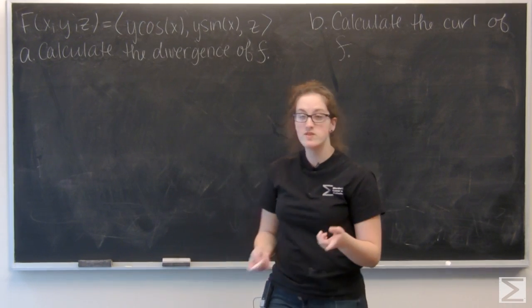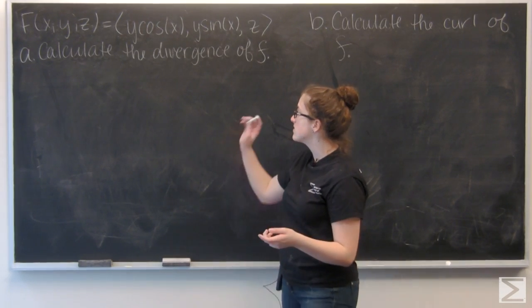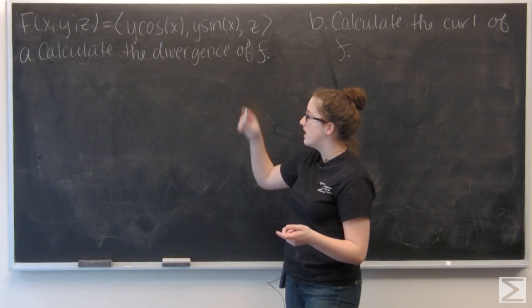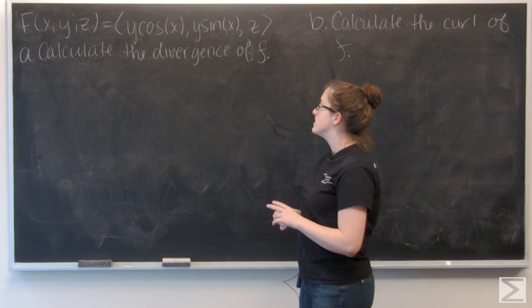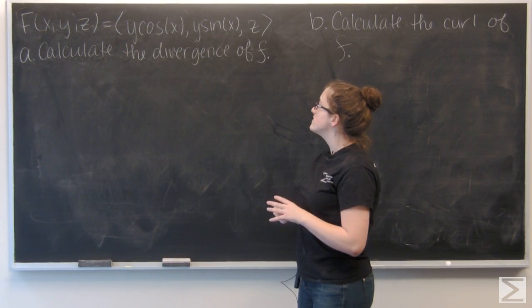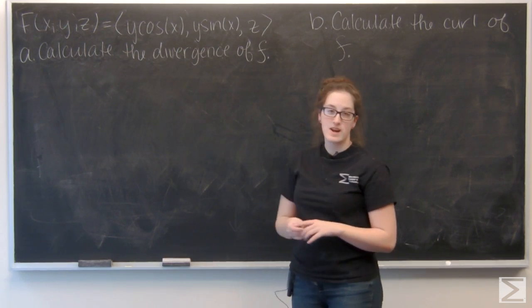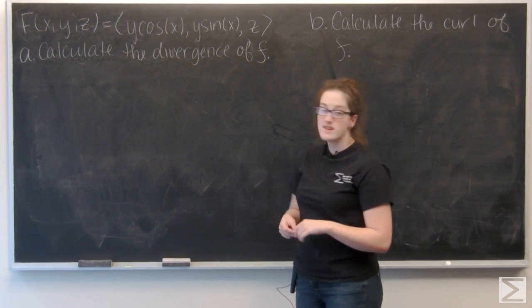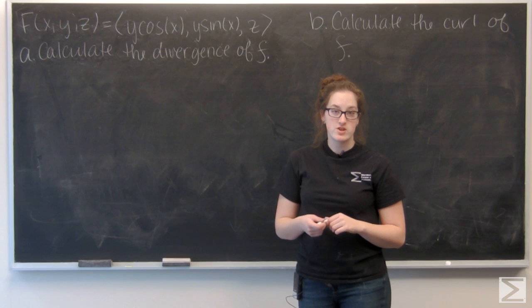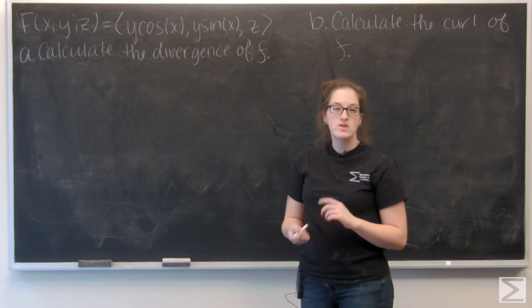For this question, we're given f of x, y, and z to be y cosine x, y sine x, and z. First, we're asked to calculate the divergence of f.